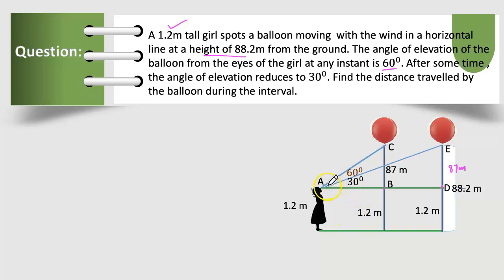Here when we see there will be two right angle triangles. One is triangle ABC and the other one is triangle ADE.